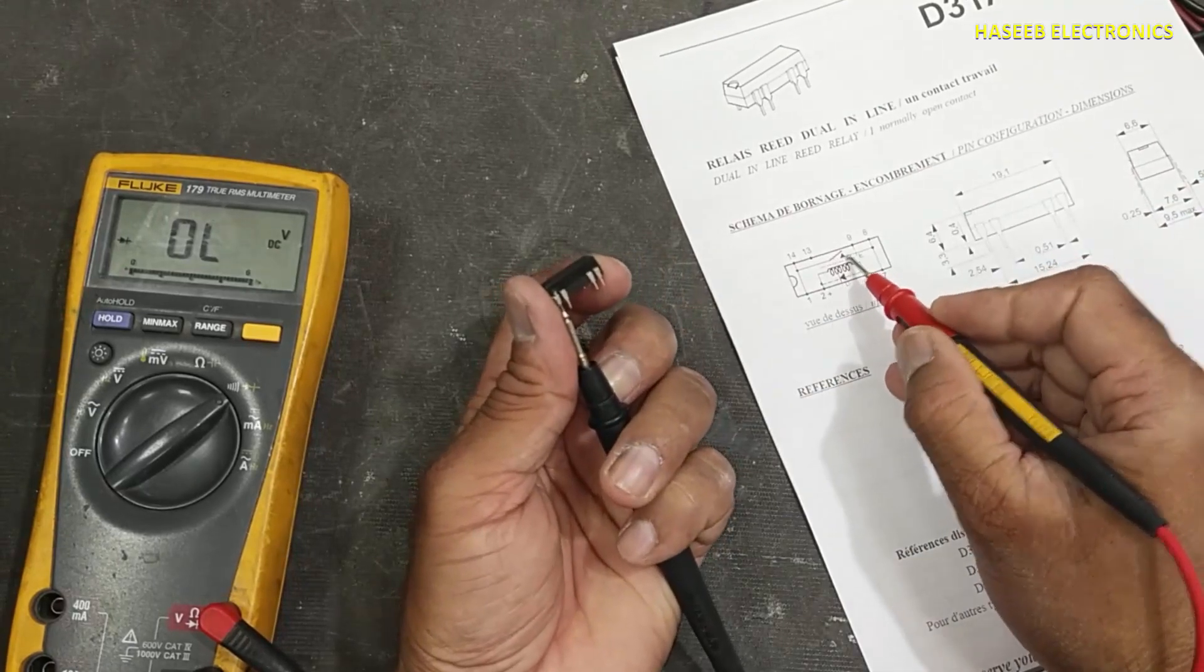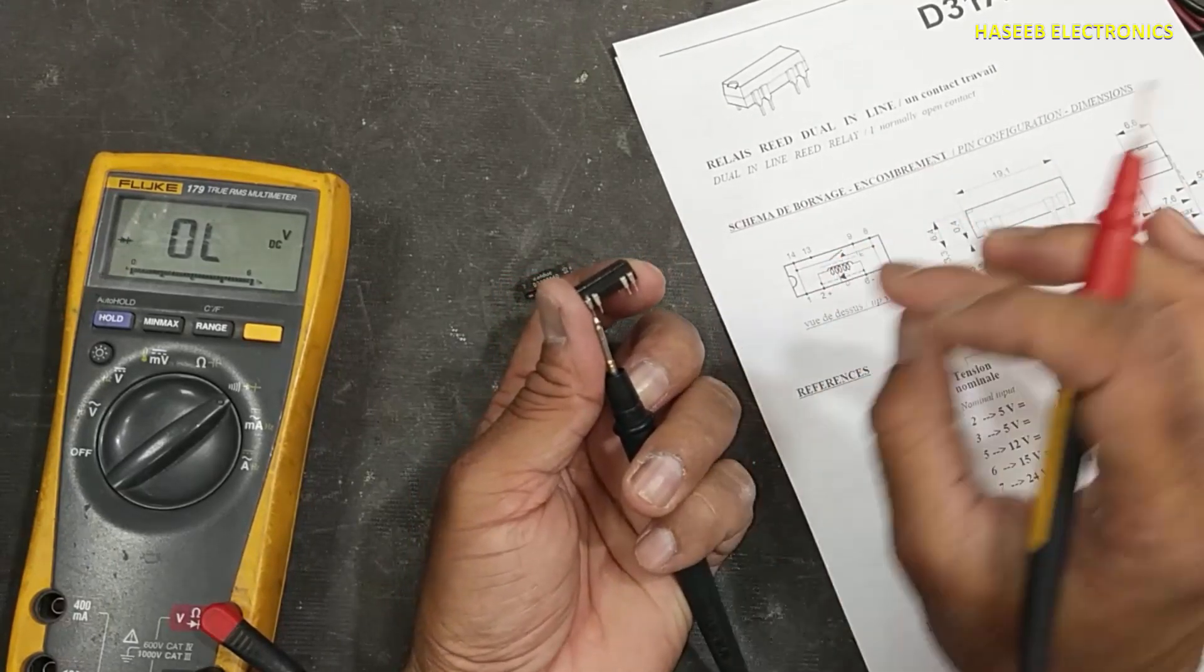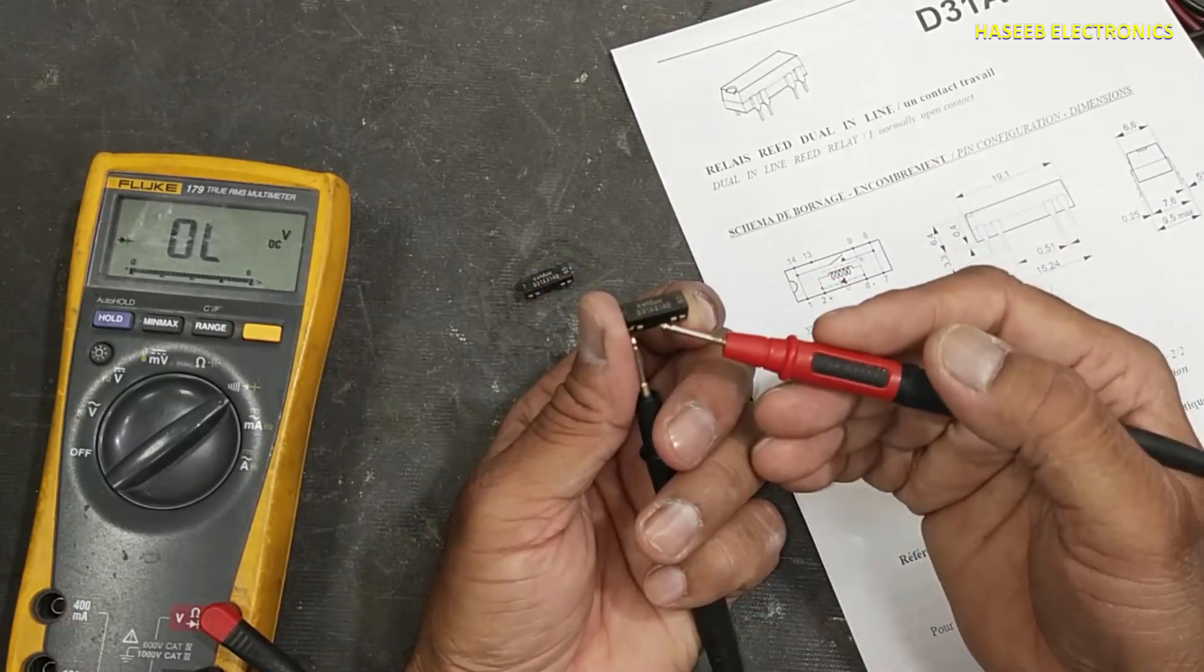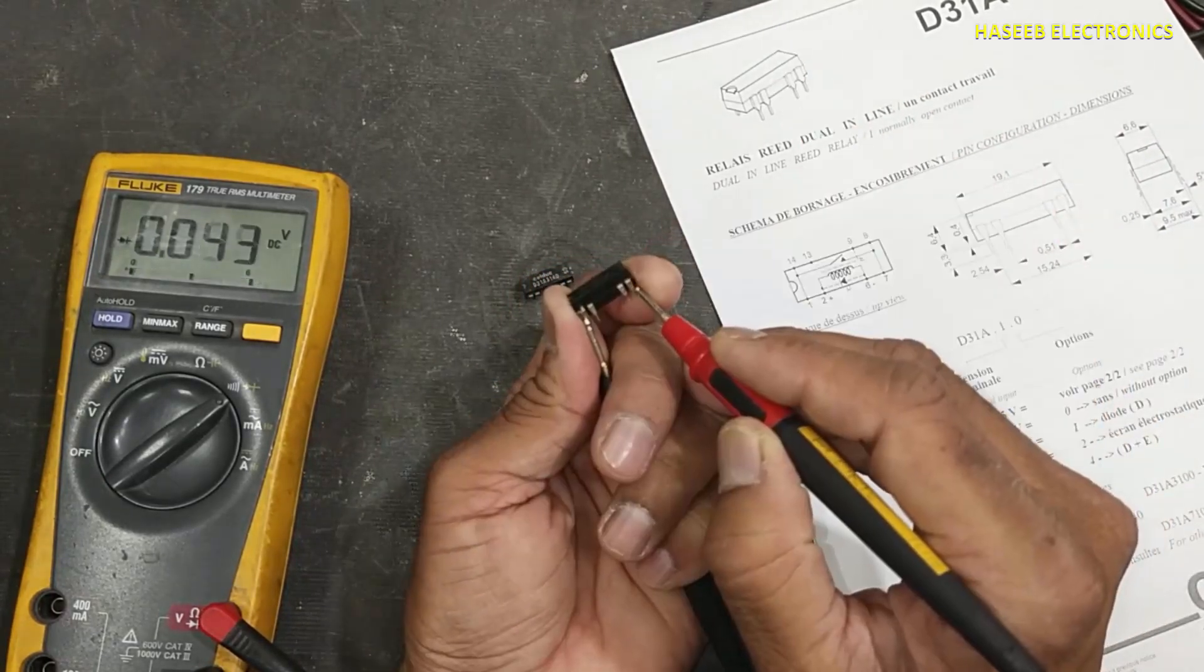This reed relay switch is short-circuited. When it's short-circuited, this relay is damaged.